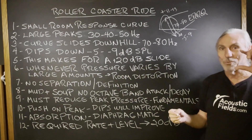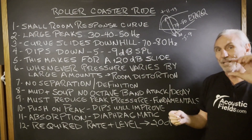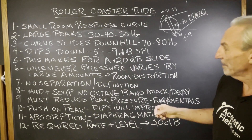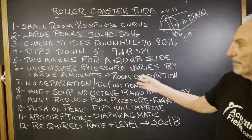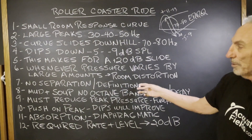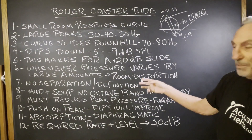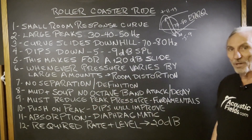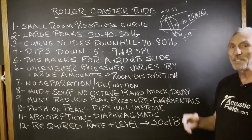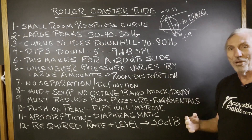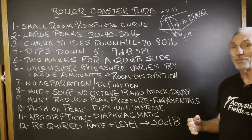How do we fix it? We shrink it. Our carbon technology is really good for this. Whenever pressure varies by large amounts, that's big distortion. We lose separation, we lose definition. We get that mud and soup, we call it. You can't hear each individual octave band, let alone each individual note.